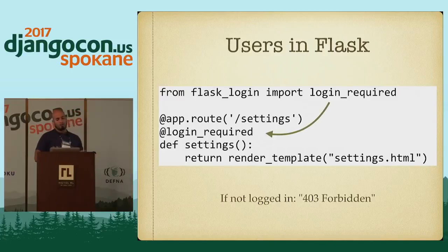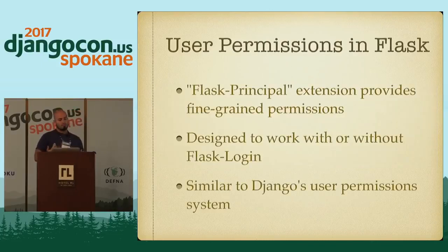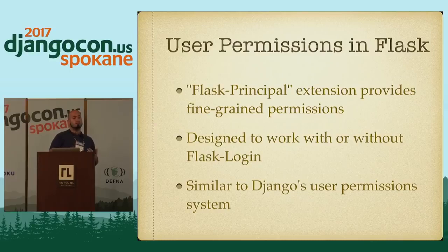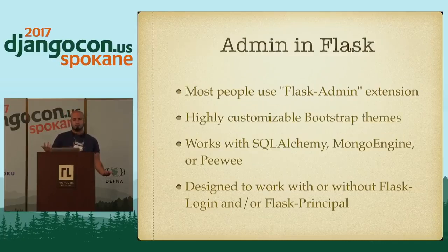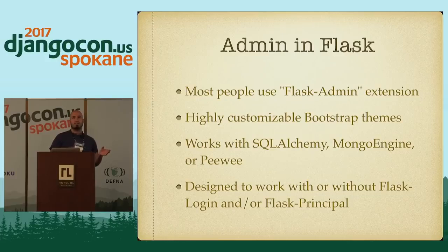If the user tries to access the view and they're not logged in, they'll get a 403 forbidden exception. Again, very similar to Django, but the idea is that you build this piece by piece. With user permissions, you can also use the Flask-Principal extension, which has a very similar fine-grained permissioning system to Django contrib.auth. The idea is if you don't want a permissioning system, you don't need to have it. Django users have that built in by default and you have to sort of deal with it whether you want it or not. With Flask, you can decide if you want to add that in or not. And with the admin, as you might expect, there's a Flask-Admin extension as well. You install it, set it up, and decide which theme you want to use — it has a couple of themes built in based on Bootstrap, or you can write your own. It works with several different database backends, including SQLAlchemy and Mongo and PeeWee.